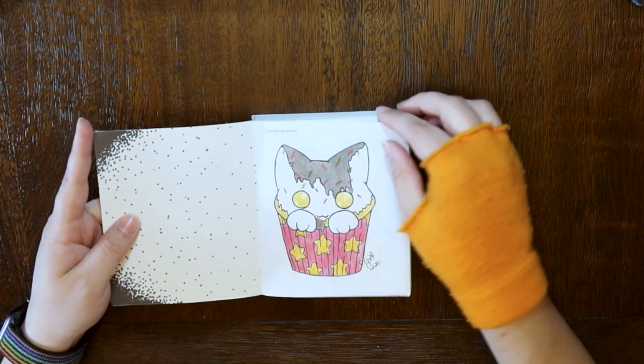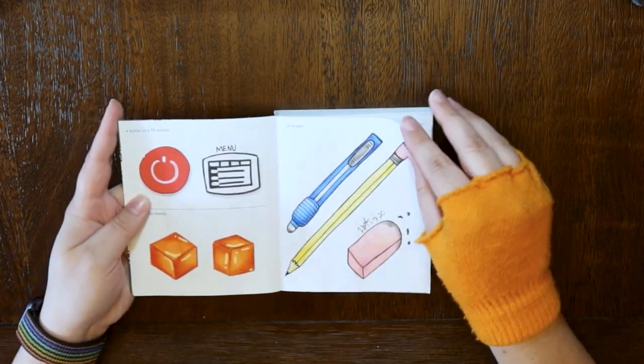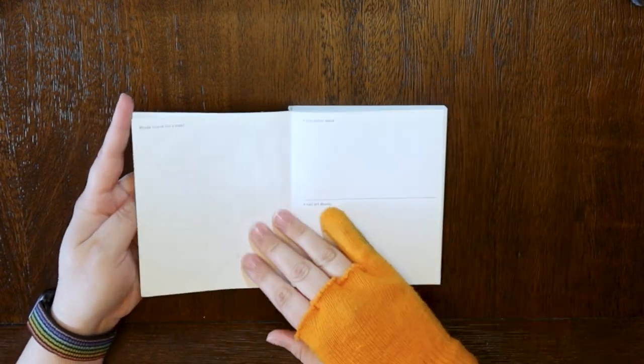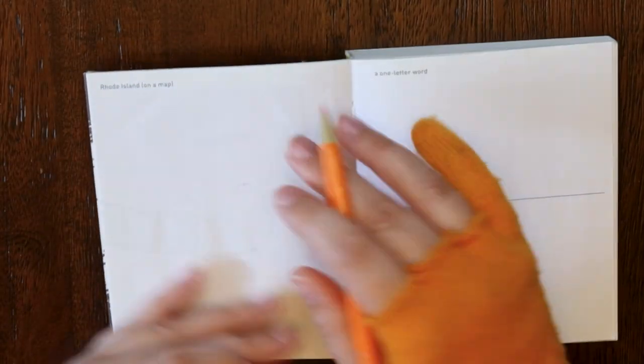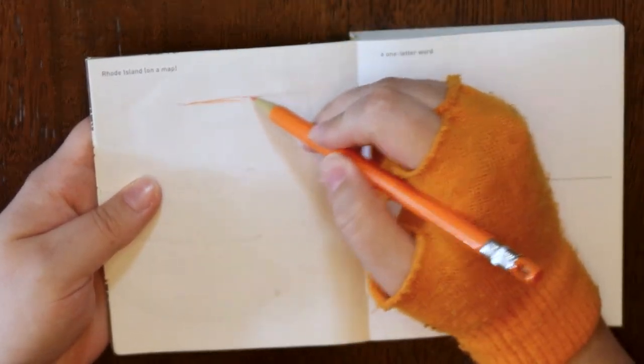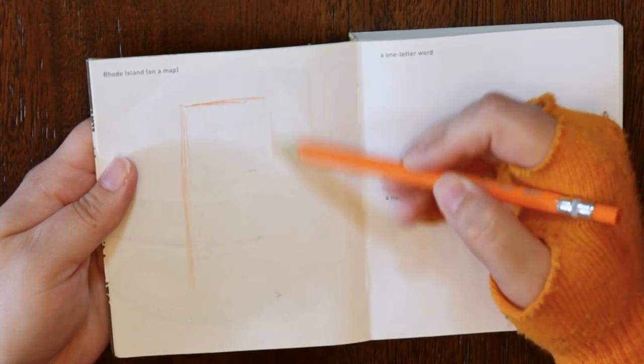But it's one of the things I brought with me when I was away. Let's do a little flip through of what I've done in the past. And this is what we're going to be starting on today: Rhode Island on a map.